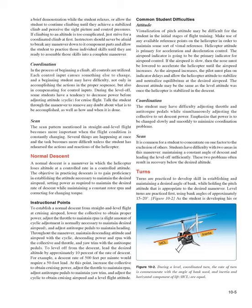Normal Descent. A normal descent is a maneuver in which the helicopter loses altitude at a controlled rate and a controlled attitude. The objective is to gain proficiency in establishing the attitude necessary to maintain the desired airspeed, setting power required to maintain the desired rate of descent while maintaining a constant rotor RPM and correcting for changing torque. To establish a normal descent from straight and level flight at cruising airspeed: lower the collective to obtain proper power, adjust the throttle to maintain RPM, apply slight cyclic adjustment to maintain desired airspeed, and adjust anti-torque pedals to maintain heading. Throughout the maneuver, maintain descending attitude and airspeed with the cyclic, descending power and RPM with the collective and throttle, and yaw trim with the anti-torque pedals.